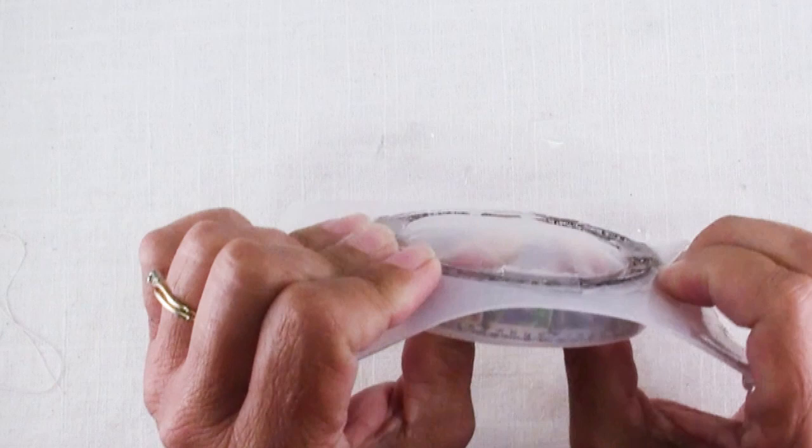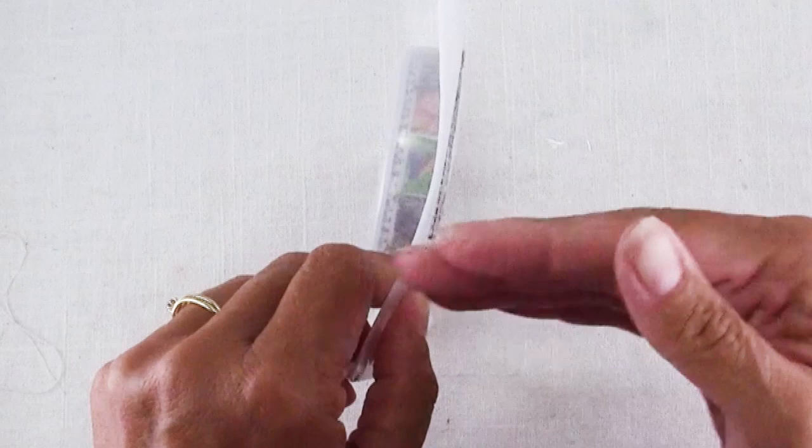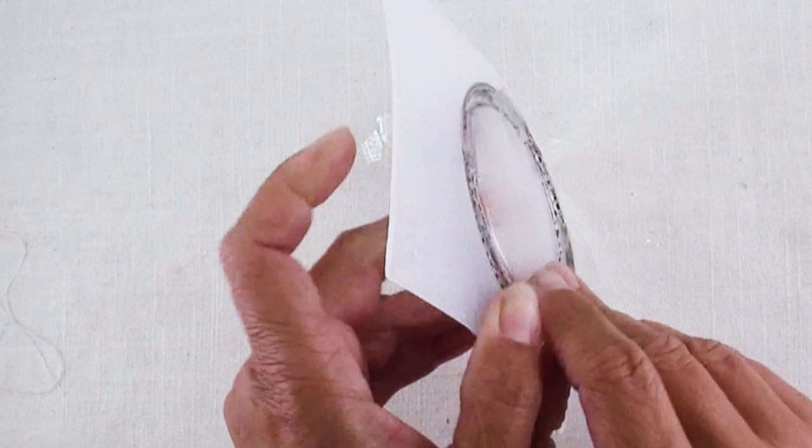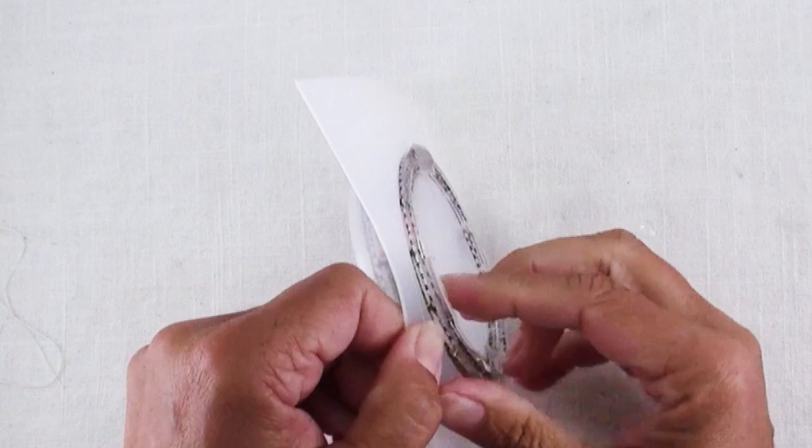And one thing I noticed about these two bangle bracelet molds is that the edges are not perfectly straight. They're a little bit at an angle, which probably makes getting them out of the mold a bit easier. Patience. Patience. Just keep working your way around. Almost there. There we go.